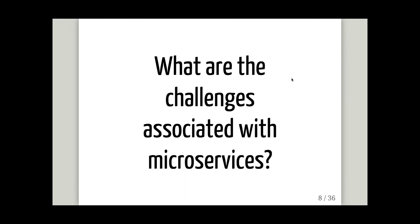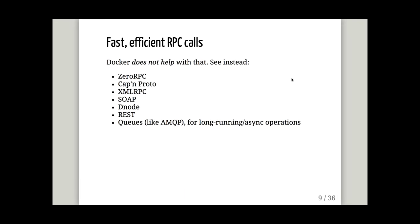That being said, microservices don't have only upsides — they also have downsides. Looking at the challenges: first, we need a way to do fast, efficient RPC calls so that one service can call others almost as efficiently as local code calls. Unfortunately Docker will not help with that part. There are many technologies available: REST APIs, SOAP, XMLRPC, gRPC, ZeroRPC — the thing we developed at dotCloud that let us code a microservice in a few hours and plug it into our infrastructure.